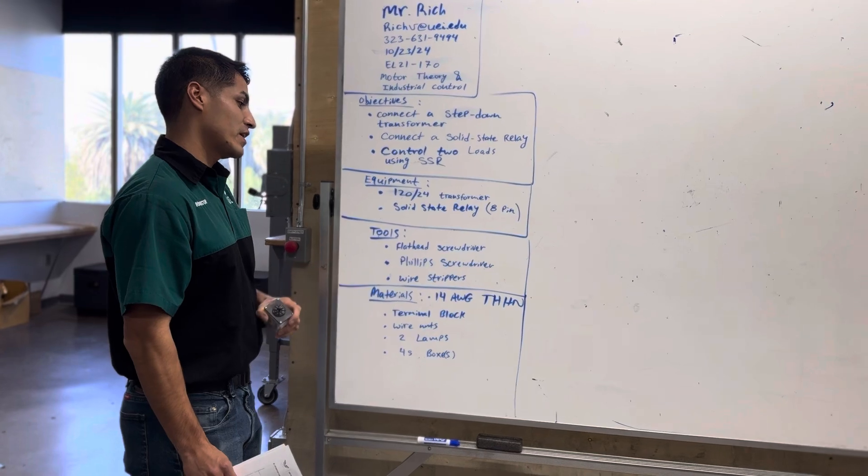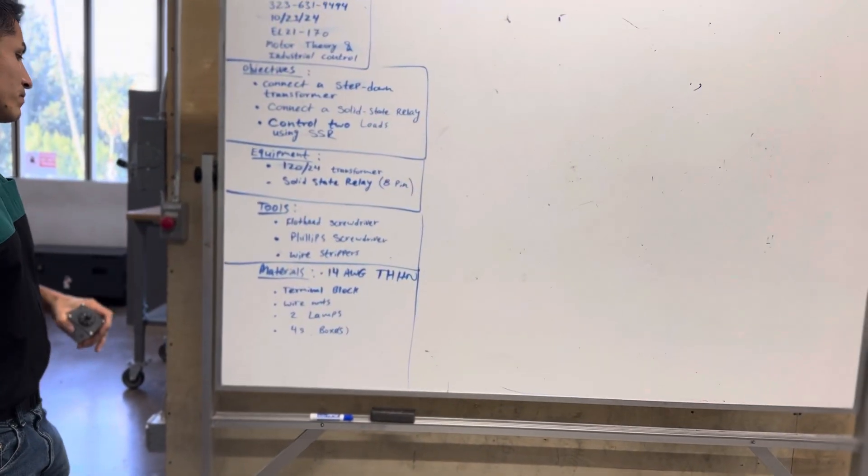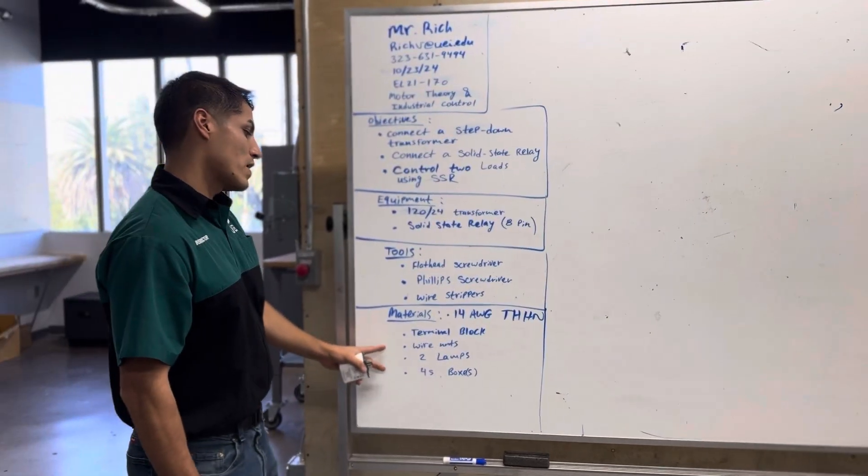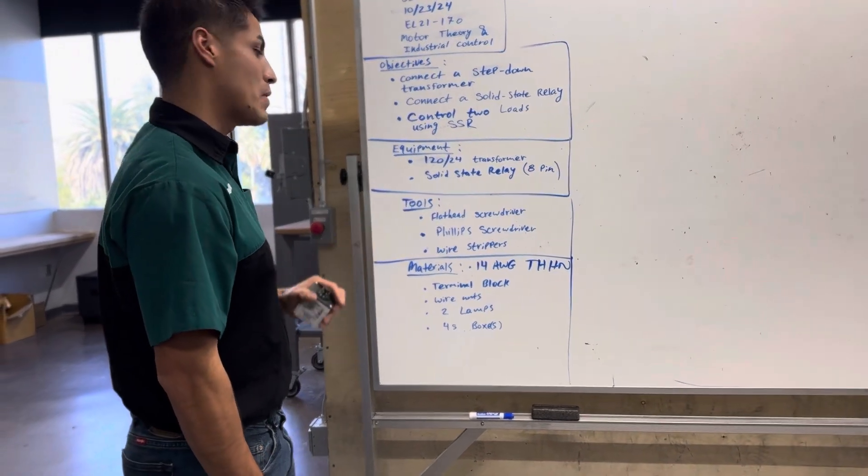Materials: 14-gauge THHN, a terminal block, some wire nuts, two lamps, and a couple of 1-4-S box.